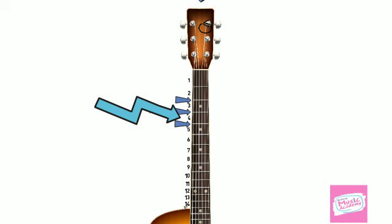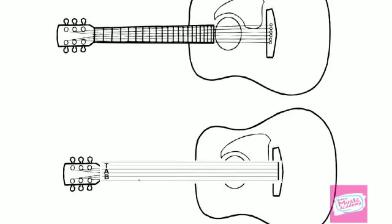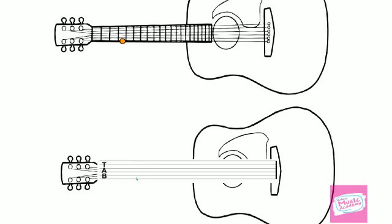So when you see a number 4 on the lowest line, that is saying to press the low E string on the 4th fret and give it a pluck. Easy peasy.